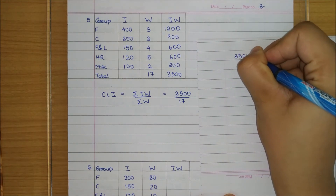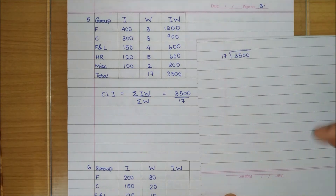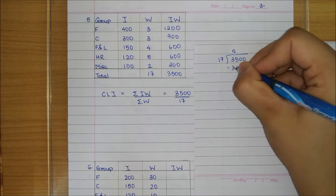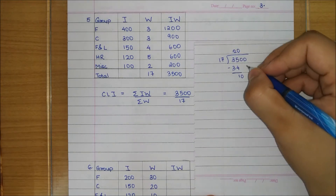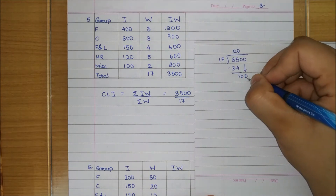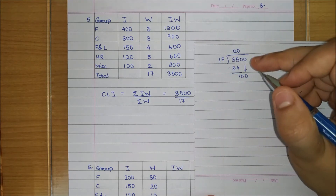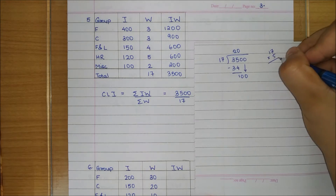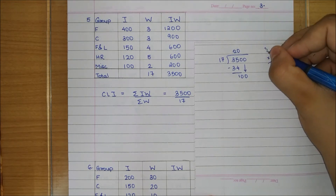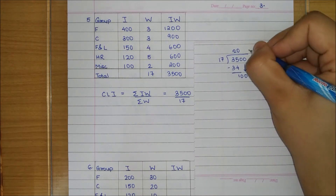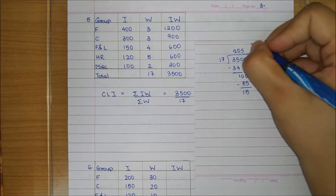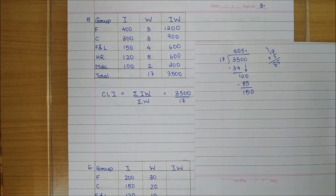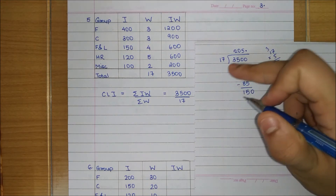We have to divide 3500 by 17. First, 17 twos are 34; bring down 0 giving 100. 17 fives are 85, remainder 15. Put a decimal, giving 150.